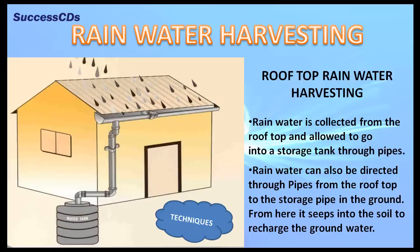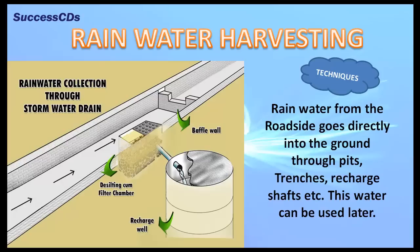Rainwater can also be directed through pipes from the rooftop to a storage pipe in the ground. From here it seeps into the soil to recharge the groundwater. Rainwater from the roadside goes directly into the ground through pits, trenches, and recharge shafts.